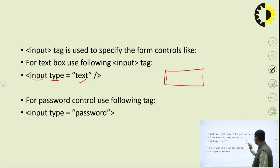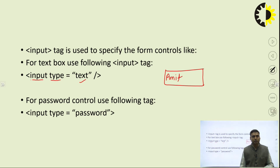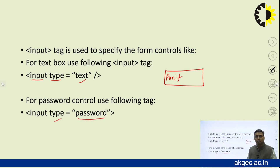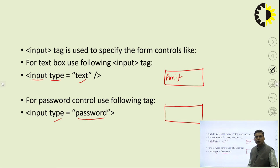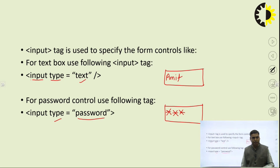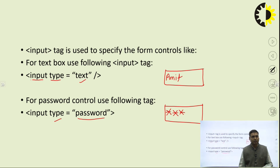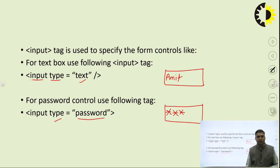In the text box you can write any information, for example a name. Now, if you want to take a password from the user, you write type equal to password. Again a text box is created, but when the user types, the information will not be displayed — it will appear as stars because we have selected the password field.